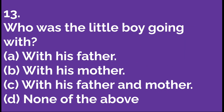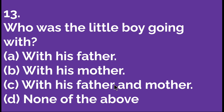The next question: who was the little boy going with? Option A: with his father. Option B: with his mother. Option C: with his father and mother. Option D: none of the above. With his father and mother. So C is the right option. Let's move to the next question.